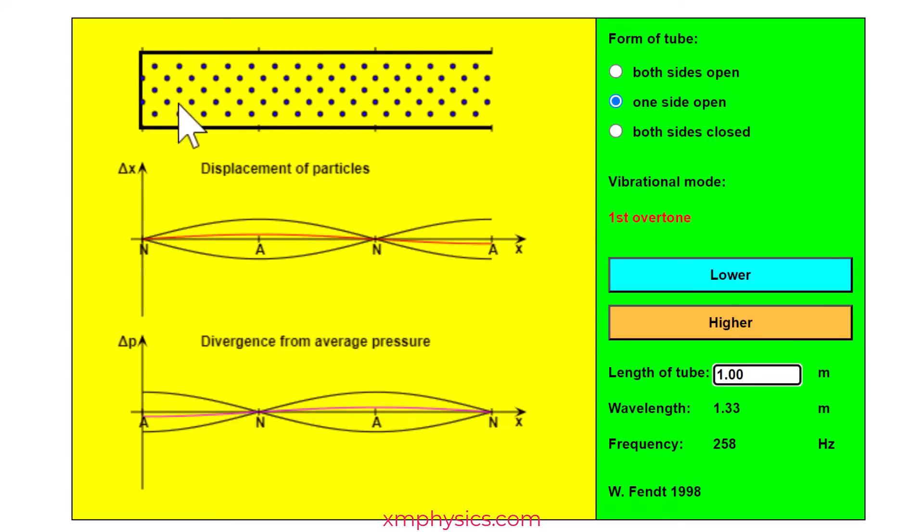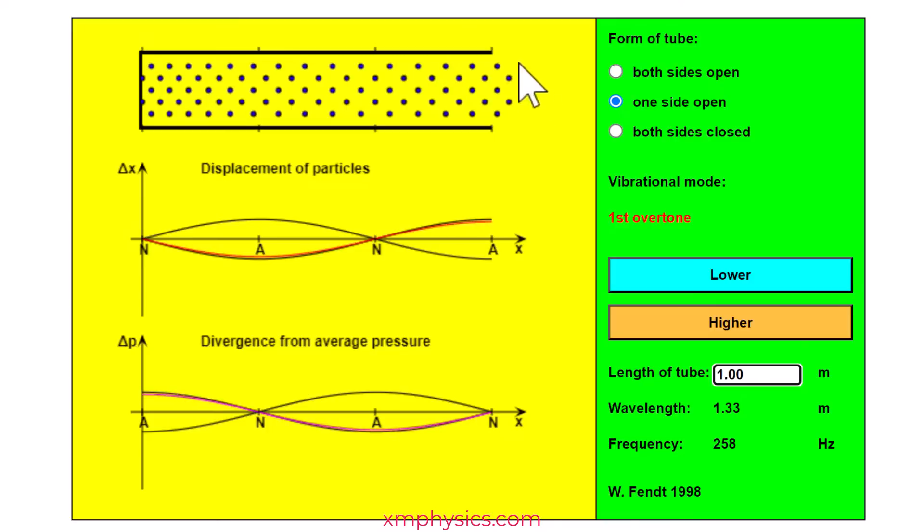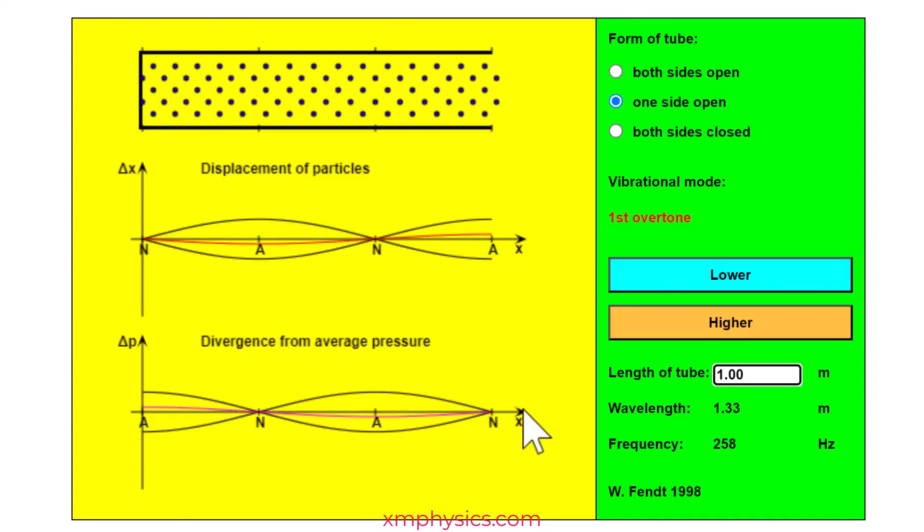So if you are talking about a closed pipe then the closed end is always a displacement node and the open end is always a displacement anti-node, which means the closed end is a pressure anti-node and the open end is a pressure node. Now how do you memorize all this? It's actually quite easy.